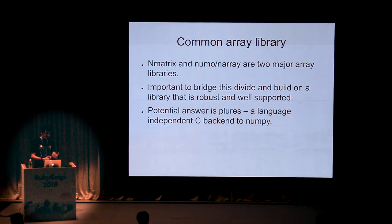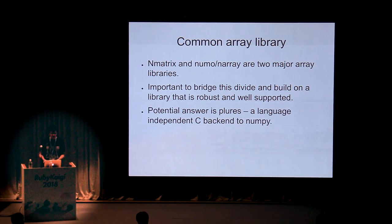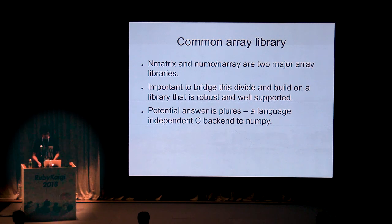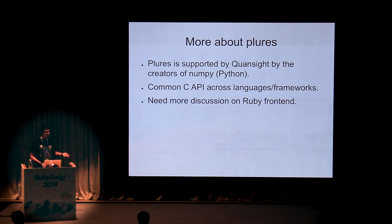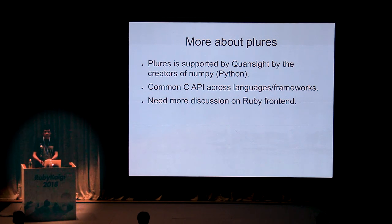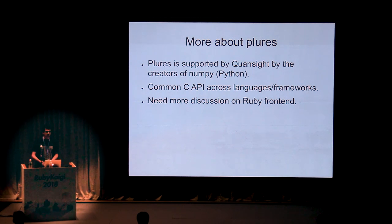Another new idea is a common array library. We have NMatrix and numo/narray, which are the two major array libraries, and I think it's important to bridge this divide and build a library that is robust and well-supported. The potential answer is a library called Pluris, which is a language-independent C backend to NumPy. Pluris is supported by QuantSight and the creators of NumPy, and they have started a process to abstract all the functionality of NumPy into C libraries, with talks to create a Ruby front end so we can leverage their work. This project has not started yet, and I would love to talk to all of you and see how we can take it forward.